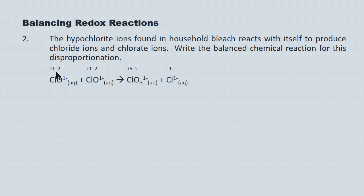From left to right: oxygen is minus two and the charge on the particle is minus one, so the chlorine must be plus one. Again, oxygen is minus two and the charge is minus one on the ion, therefore the chlorine must be plus one. Here, oxygen is minus two and there are three of them for a total oxidation state of minus six; the charge on the particle is minus one, so the chlorine must be plus five. Finally, we have a bare chloride ion whose oxidation number equals its ion charge: minus one.